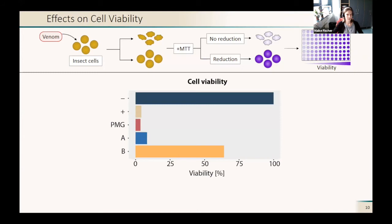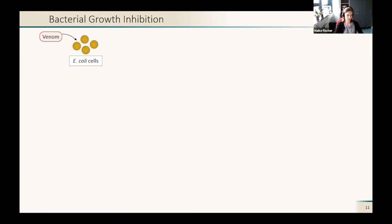You can see the cell viability of these insect cells in percent. The negative control, the cells without any treatment, were alive. Our positive control with the cytotoxic chemical, almost all of them died, as well as in the unfractionated PMG sample. Both of our fractions also significantly affected the cell viability. Especially fraction A caused almost 100% cell death. We can see that both fractions reduced insect cell viability.